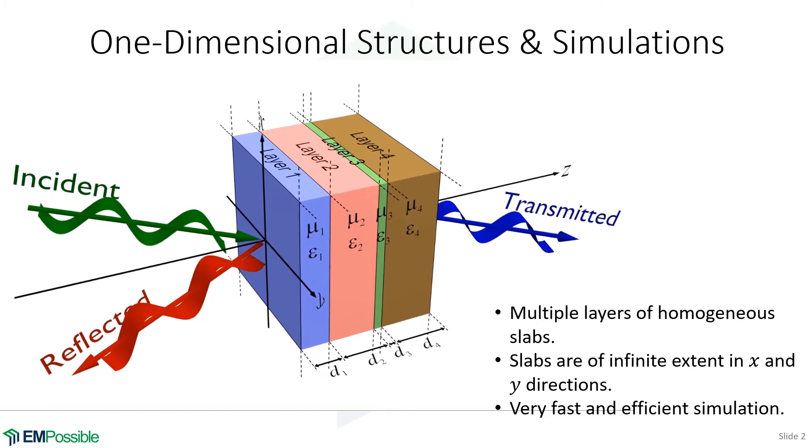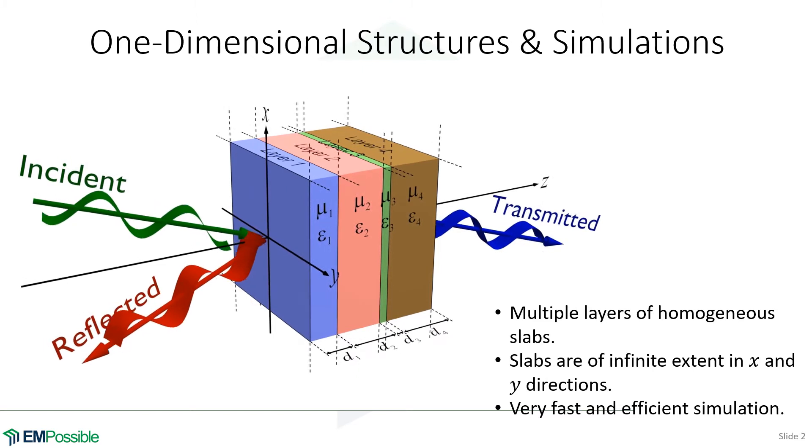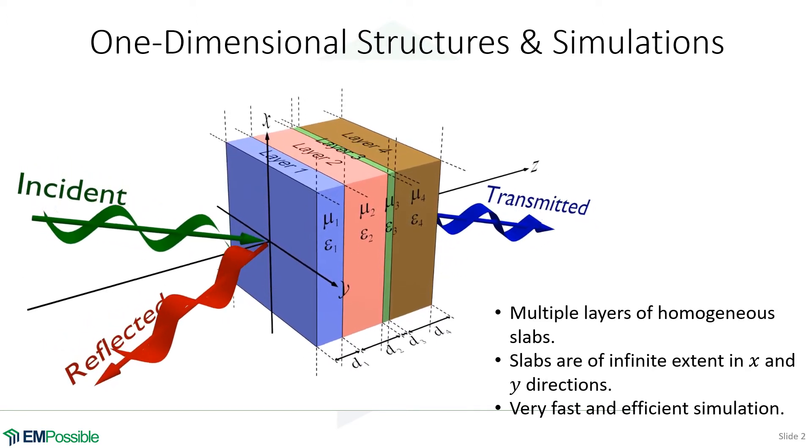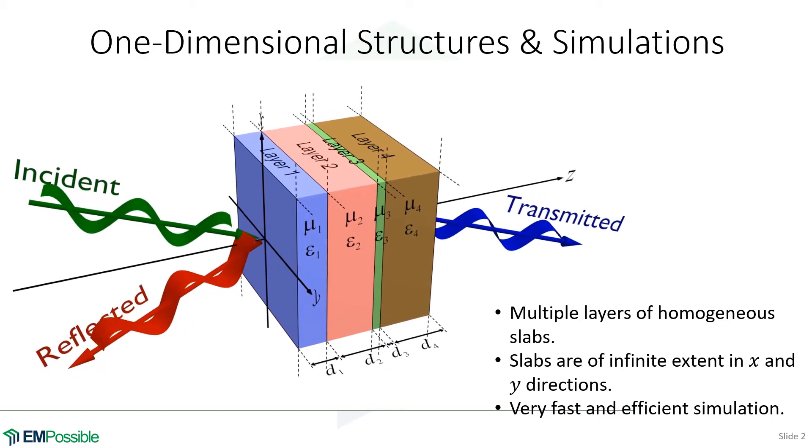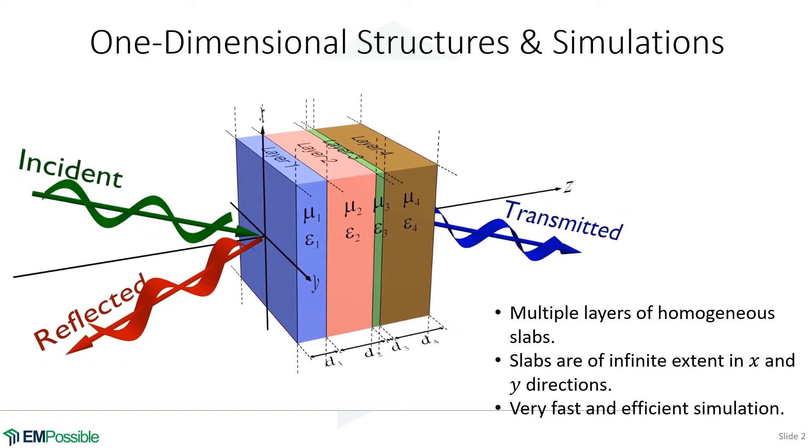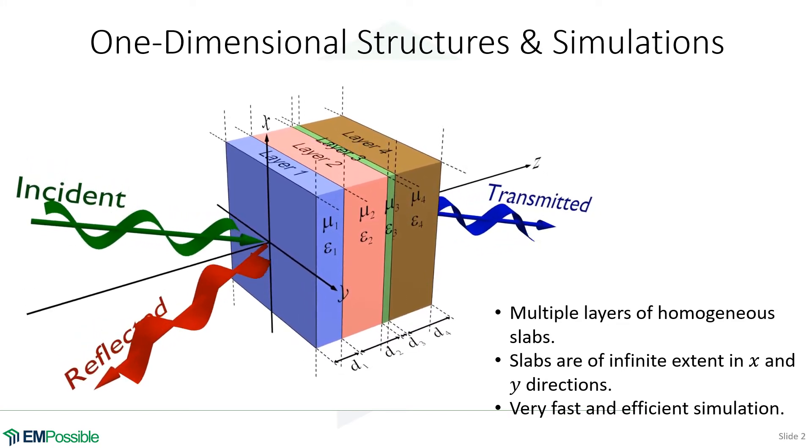I will start by saying no matter what we're simulating, we are always doing something that is representing something that is physically three dimensions. It's just that sometimes numerically we can reduce this down so that we only have one dimension where things are changing.